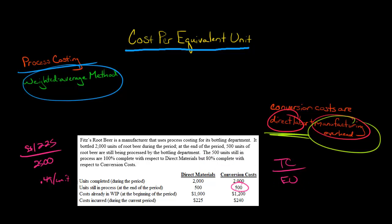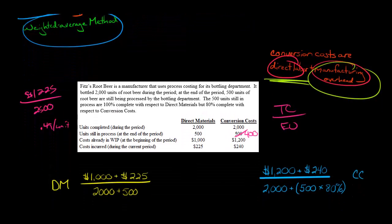To get the number of equivalent units for those, we're going to take 500 and multiply it by 80%. So 500 by 80% is 400—that's the number of equivalent units there. And so then we've got our cost, $1,200 plus $240.